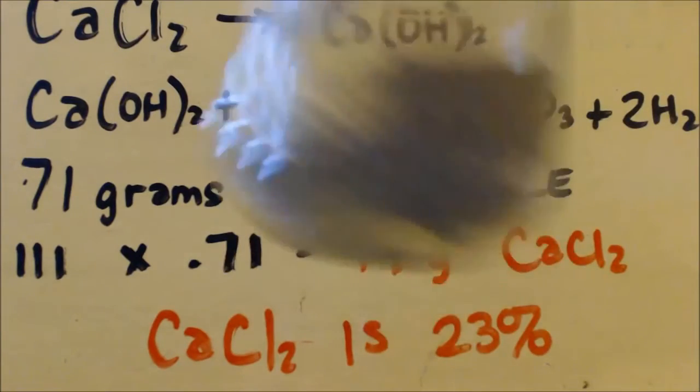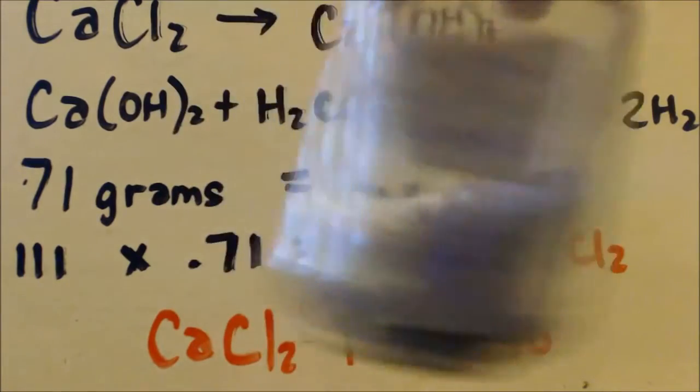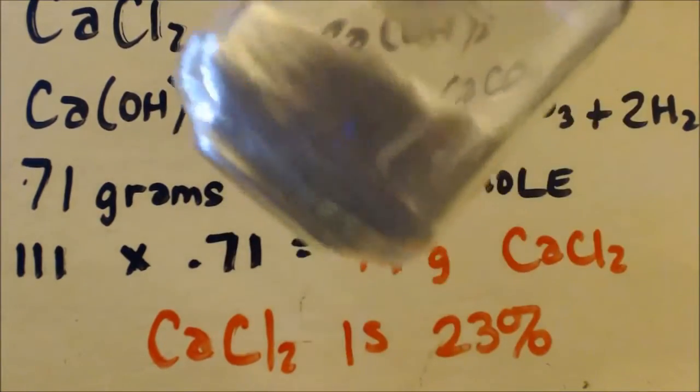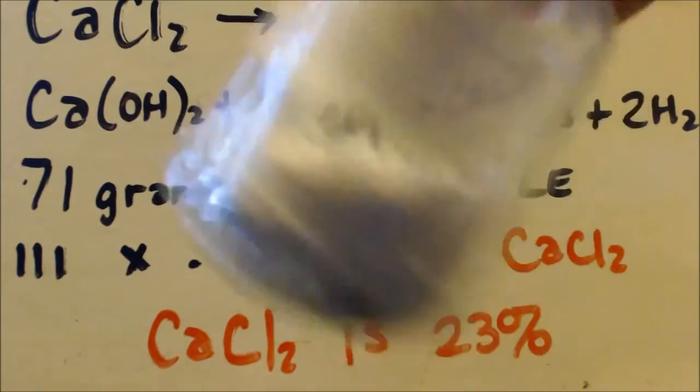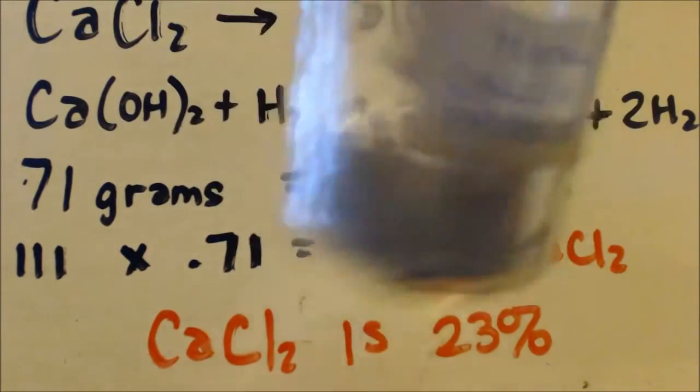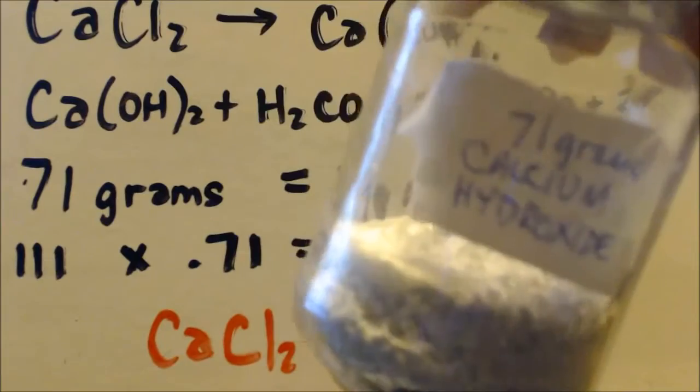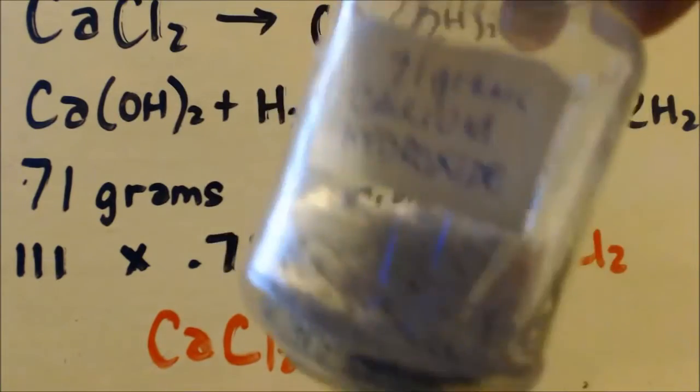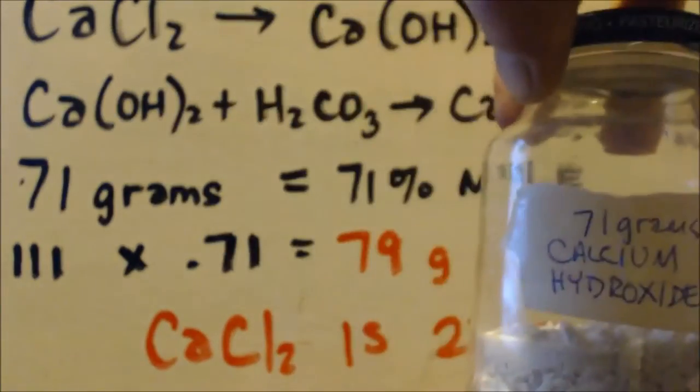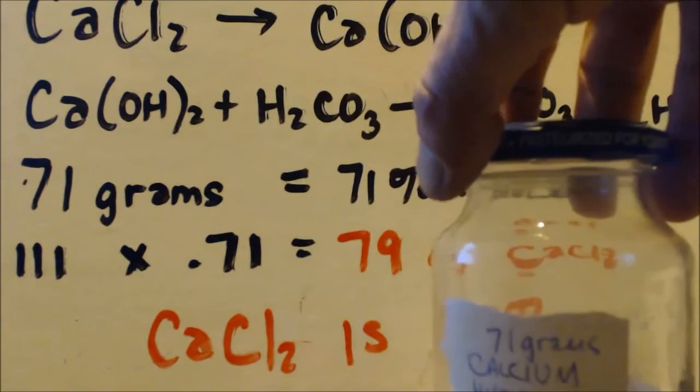I just kept this calcium hydroxide when I first made it on the radiator until it got all dry, and then I put it in this jar. And now it's calcium carbonate from all the carbon dioxide in the air getting into the water.